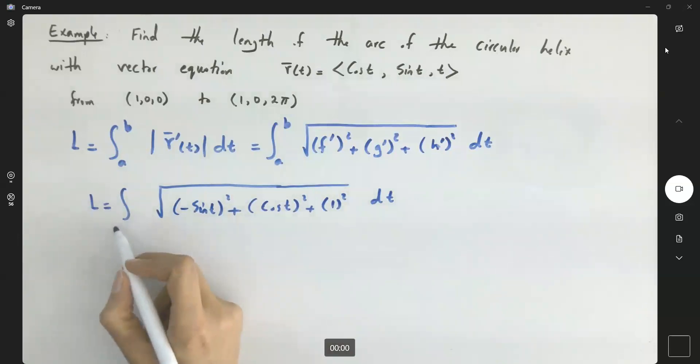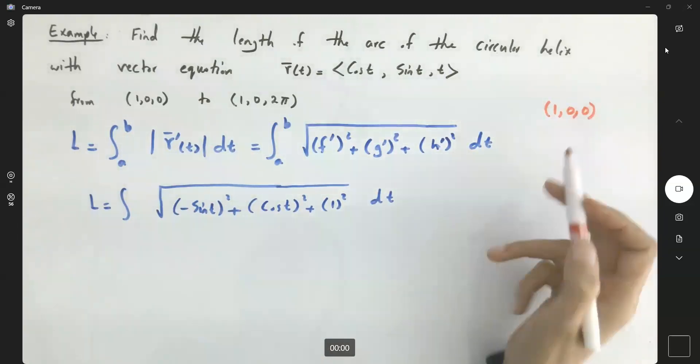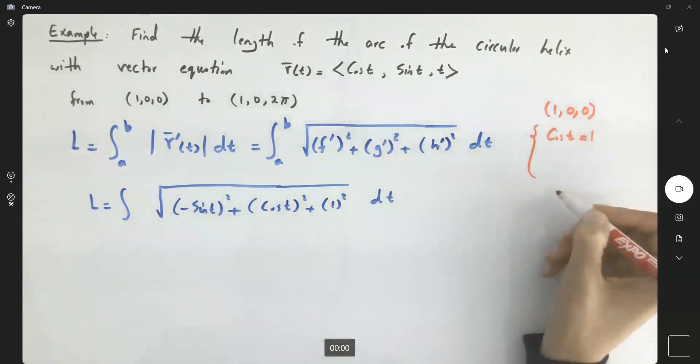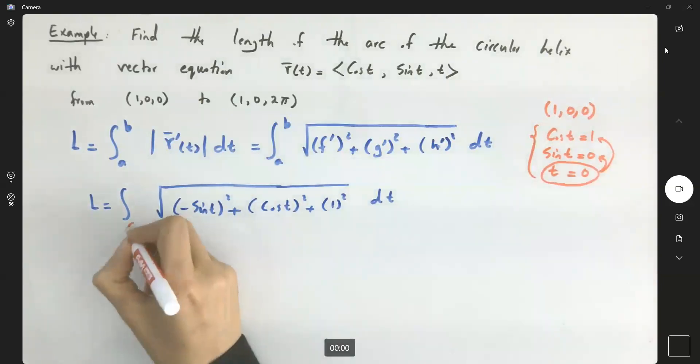We need to identify what is the lower bound and what is the upper bound of our t. The starting point is (1,0,0). Well, it means that at this point cosine of t is equal to 1, sine of t is equal to 0, and t is equal to 0. t equal to 0 satisfies these two equations, so it means that the lower bound is equal to 0.